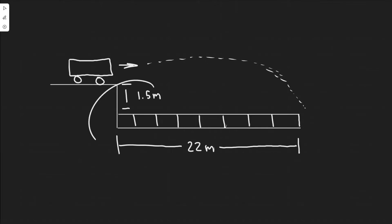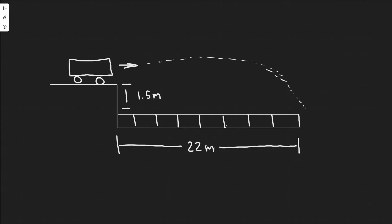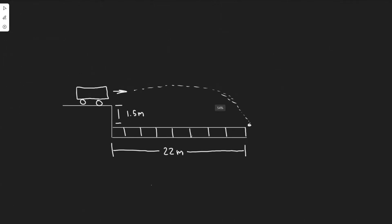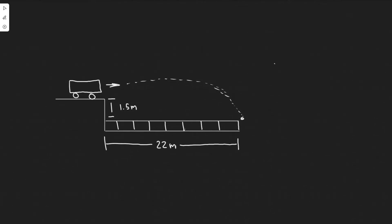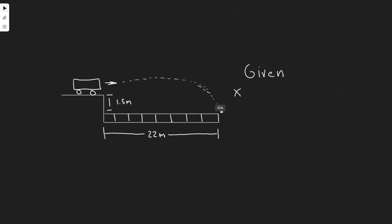I went ahead and drew what we have going on here. We have this car and he's going to try and jump over these eight cars and he's got to basically clear them. The distance between where he jumps off is 1.5 meters and the distance he has to travel is 22 meters. We're doing a kinematics problem and the way I always like to start off is by writing down my variables. Since this is two-dimensional, I'll write my given in the x and also in the y.